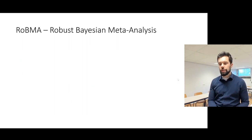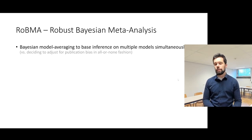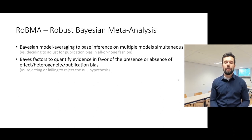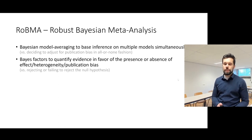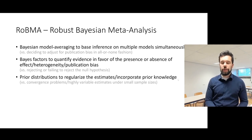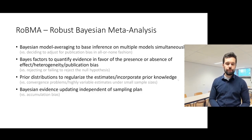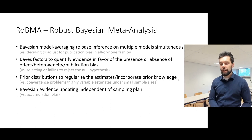ROBMA differs from other publication-bias adjustments in its ability to combine inference from multiple models. We use Bayesian model averaging, which allows us to combine models representing different assumptions of a data-generating process and weight their results according to posterior probabilities. We use Bayes factors to quantify evidence in favor of presence or absence of an effect, including publication bias. This is a major advantage over standard frequentist methods, which can only reject a null hypothesis. We also use prior distributions to regularize estimates, which helps with convergence — especially for publication-bias adjustment models that often suffer from poor convergence. Additionally, Bayesian evidence accrual is independent of the sampling plan, which is especially hard to justify in meta-analysis where we don't control the sampling of studies.